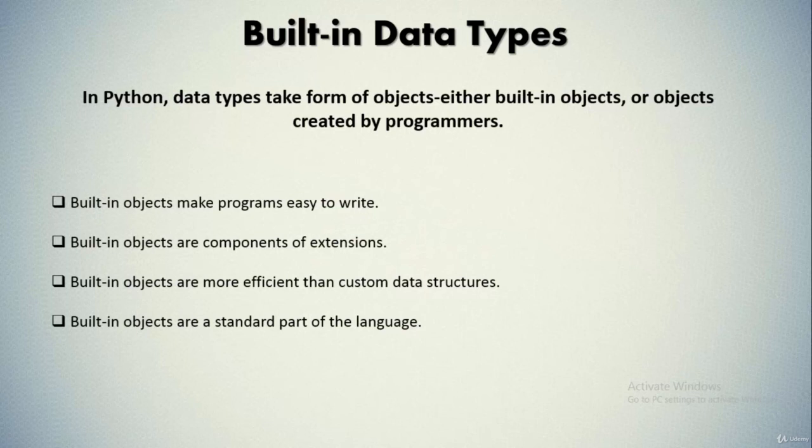In other words, not only do built-in object types make programming easier, but they're also more powerful and efficient than most of what can be created from scratch. Regardless of whether you implement new object types, built-in objects form the core of every Python program. That's all for data types — we'll cover built-in objects in more detail in further video sessions.